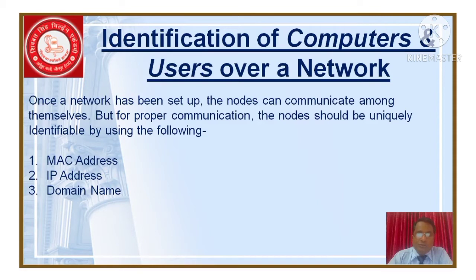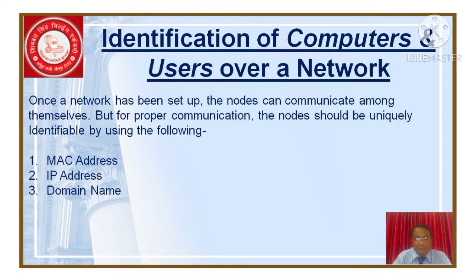As you know, once the network has been set up, whatever nodes are connected with that network are going to communicate with other nodes. For having proper communication from node to node, we require that each and every node is identified uniquely. There are three ways to identify the nodes: number one, by using the MAC address; number two, by using the IP addresses; and number three, by using the domain name.